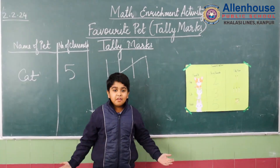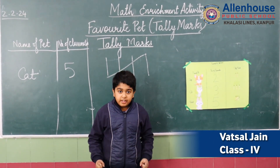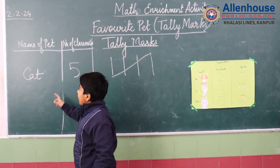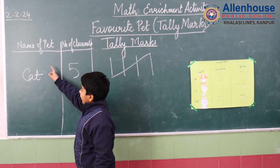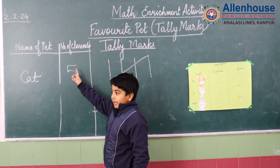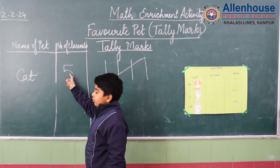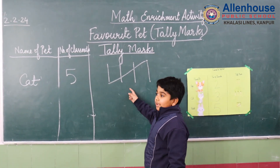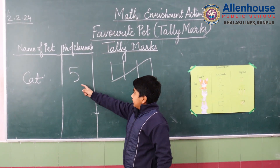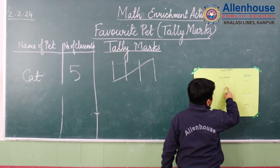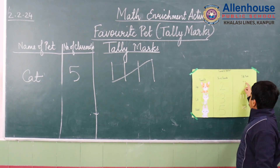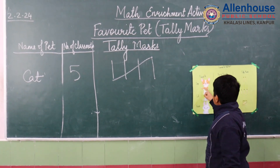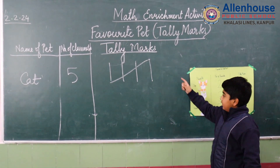Good morning everyone, today we are doing the activity on tally marks. First, we have to make three columns. In the first column, we will write the favourite pet's name. Then we have to write the number of classmates who chose that pet. Then we have to write the tally marks. For example, we have written two over here, so for tally marks we will write two marks here for a dog. Like this, we have to do for all three pets.